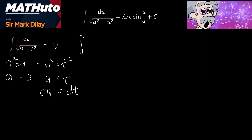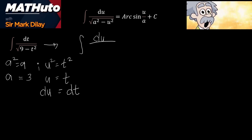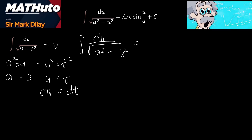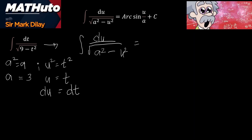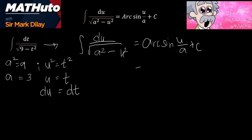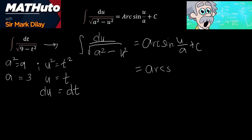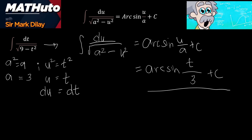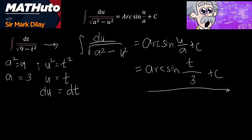The given becomes the integral of dt, which equals du over the square root of 9 (a²) minus t² (u²). Therefore, we have the integral of du over the square root of a² minus u², which equals arcsin(u/a) plus C. Substituting the values of u and a gives us arcsin(t/3) plus C.